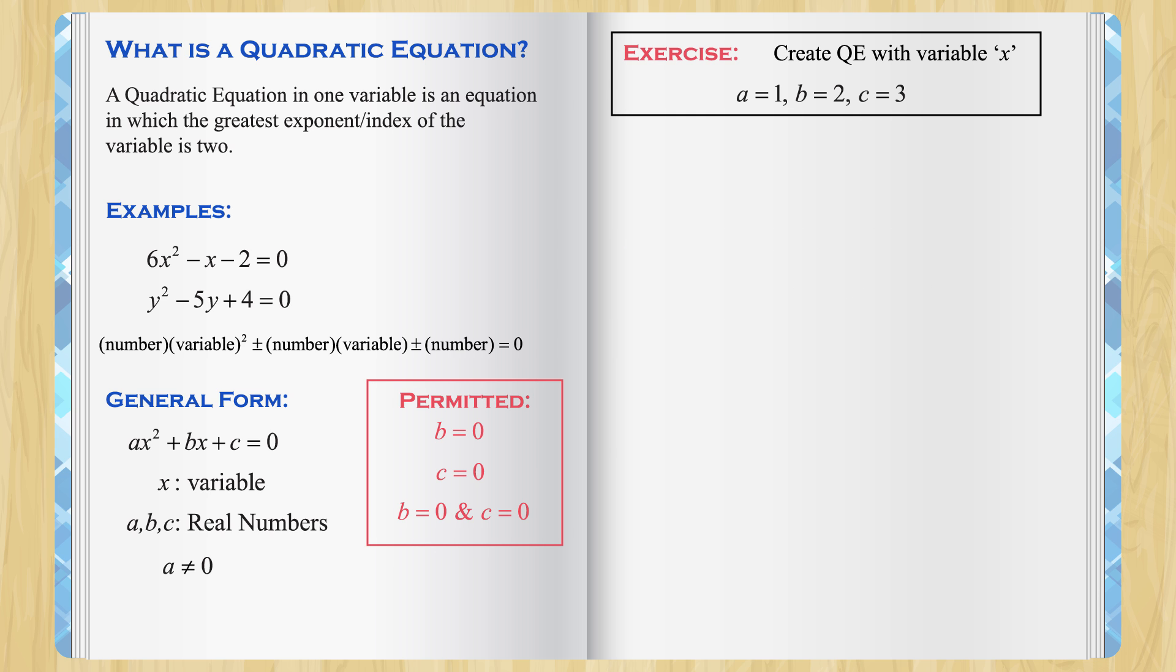Let us focus on the first one for now. It says, create a quadratic equation in variable x with a equal to 1, b equal to 2 and c equal to 3. So, let's bring the general form here. Since the variable is supposed to be x, these two are just fine.